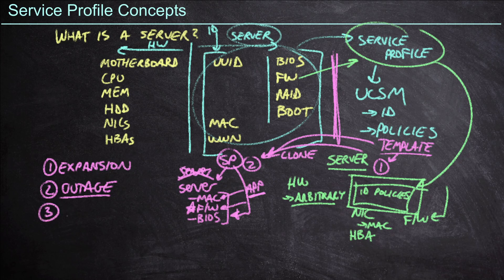The last option, which is pretty similar to the outage situation, is going to be the idea of an upgrade. For example, if I'm running old Cisco UCS M4 servers and I'm ready to upgrade to the M6 — going from the fourth generation to the sixth generation UCS server — at this point I can simply move the service profile that was attached to the M4 server over to the M6.